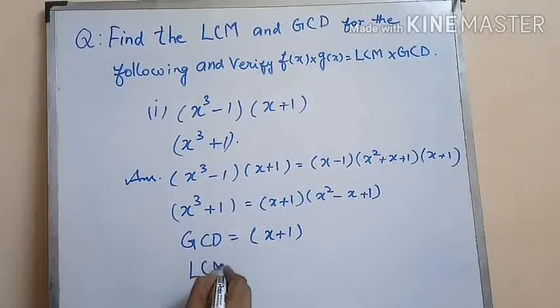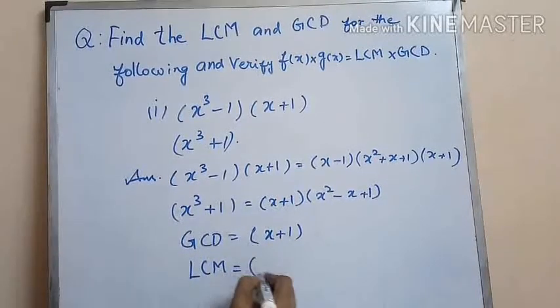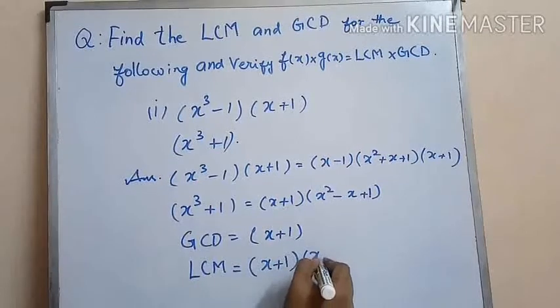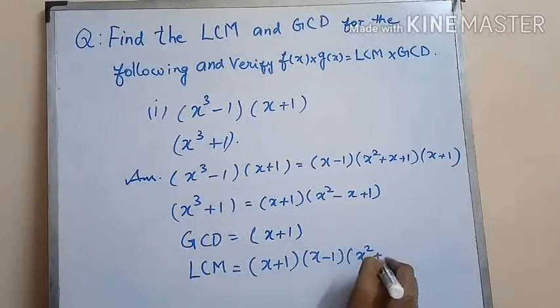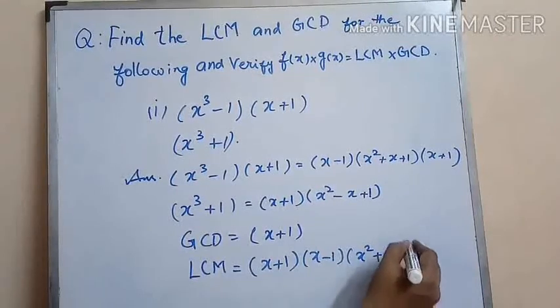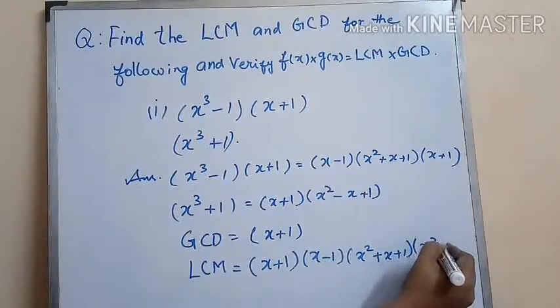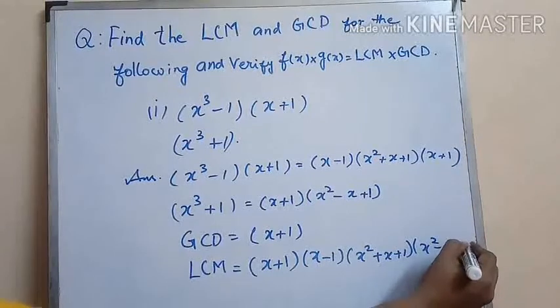And LCM is, the only common factor we have here is x plus 1, and the rest of things should be written. So we have x plus 1 times x minus 1 times x squared plus x plus 1 times x squared minus x plus 1.